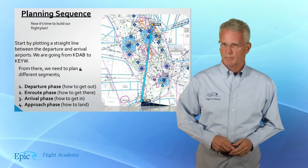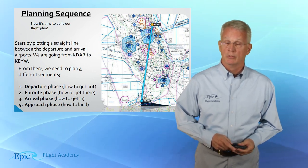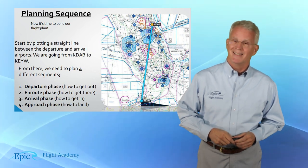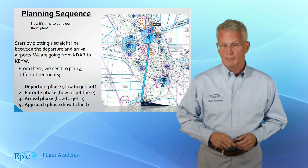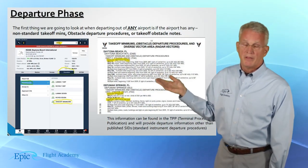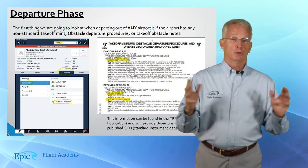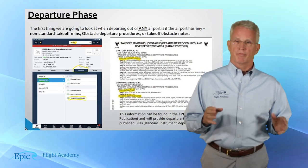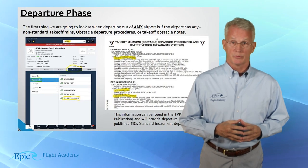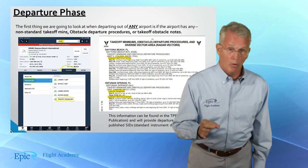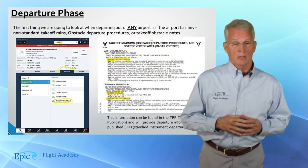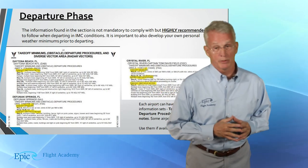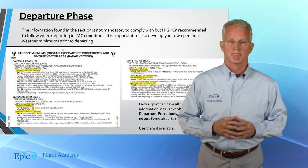In our scenario we're planning a flight from Daytona Beach to Key West. The first thing to check is to see if the departure airport has any non-standard takeoff minimums or obstacles. An airport may have just takeoff obstacle notes — look at Daytona — or it may have takeoff minimums and takeoff obstacle notes, such as Defuniac Springs. Or it may have takeoff minimums, takeoff obstacle notes, and departure procedures, for example Crystal River. Or the airport may not have any of these.